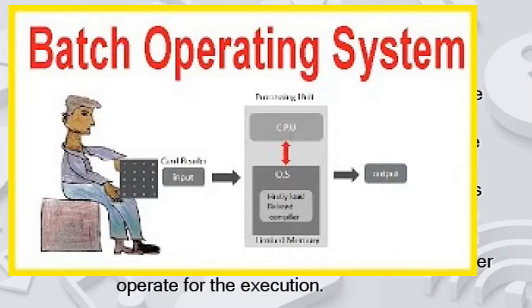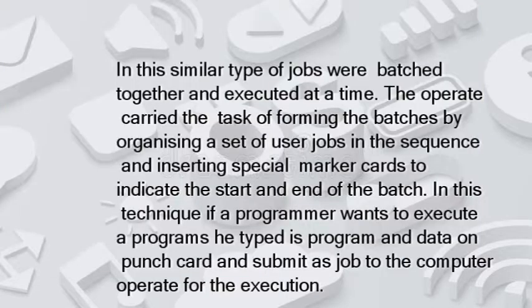The first type is the batch processing operating system. 'Batch' means dividing tasks into different sub-tasks or batches — like coaching classes divided into evening batch and morning batch based on timing shifts. Similarly, in batch processing OS, similar types of jobs are batched together and executed at the same time. The operator carries the task of forming the batch by organizing a set of user jobs in a sequence.